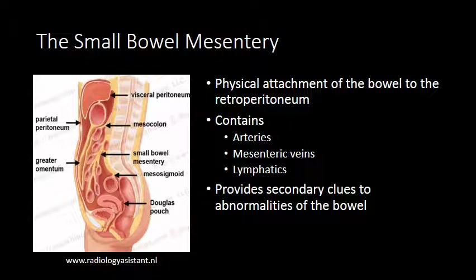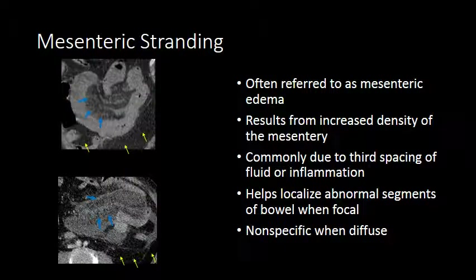Often, abnormalities of the mesentery, most commonly referred to as mesenteric stranding, can direct you to areas of abnormal small bowel, which you can inspect more closely to hopefully determine the etiology of the abnormality. Mesenteric stranding is a common term for increased density of the mesentery. That increased density may be related to edema, inflammation, or infiltration, but it is commonly third spacing of fluids within the mesentery that results in the stranding.